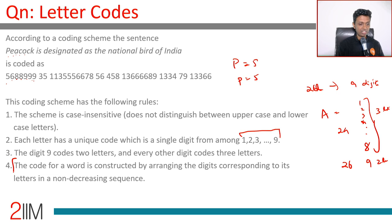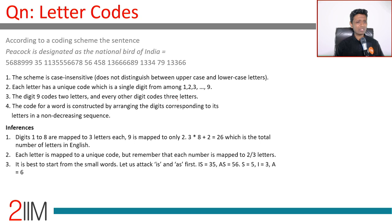If you're told peacock is coded a certain way, it doesn't mean P is five, E is six, A is eight — it doesn't work like that. We write down all the digit codes for 'peacock' and arrange them in non-decreasing (ascending) order, including equal numbers. So it becomes five, six, eight, eight, nine, nine, nine.